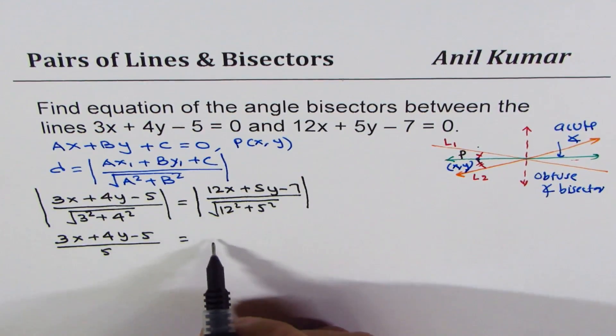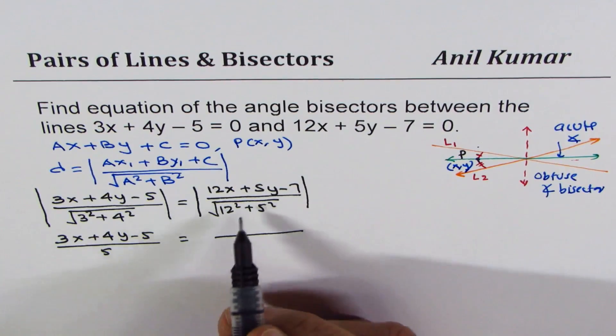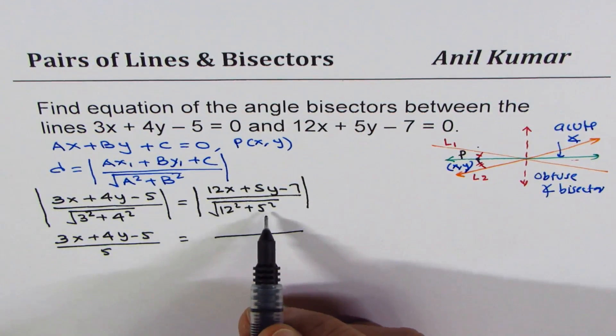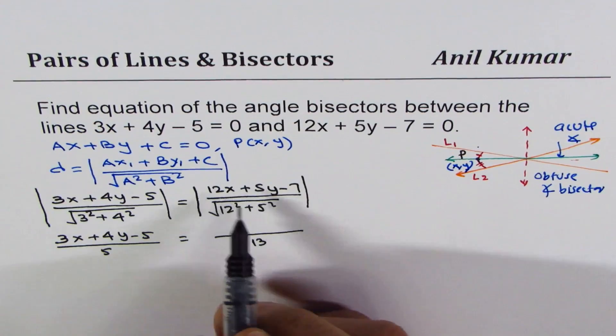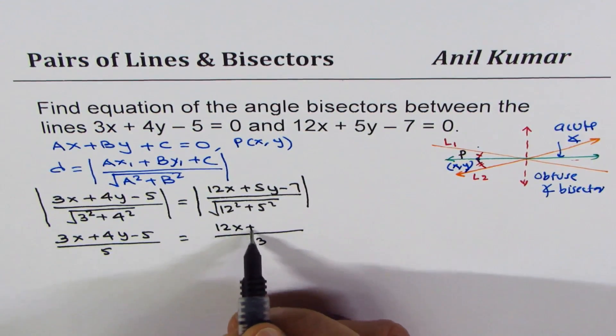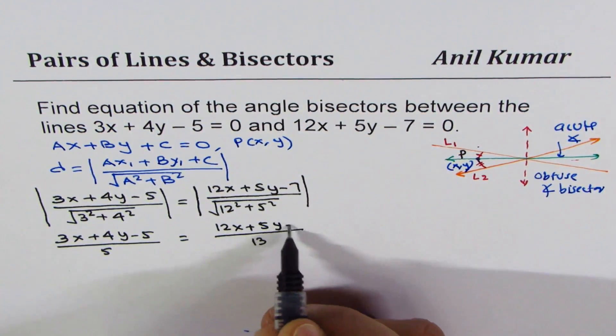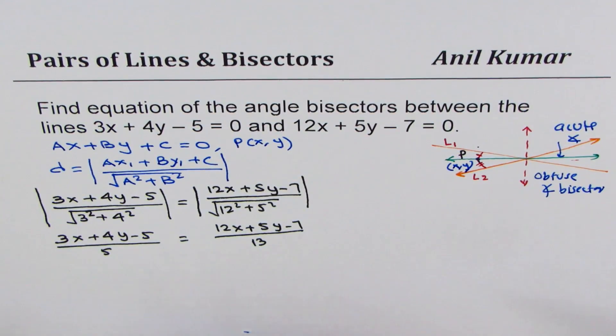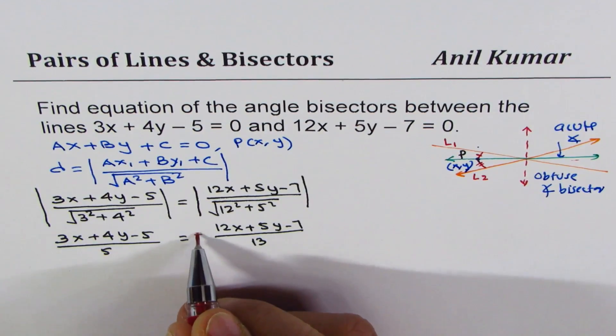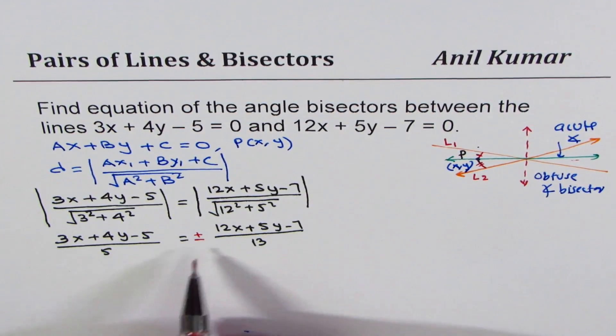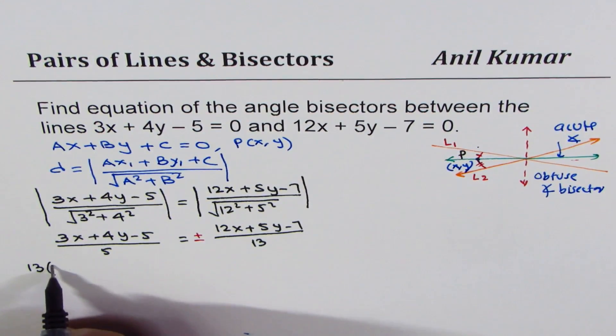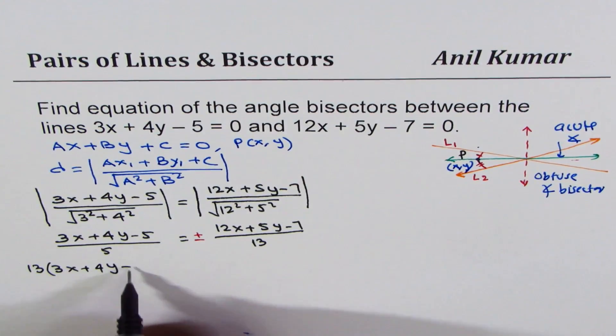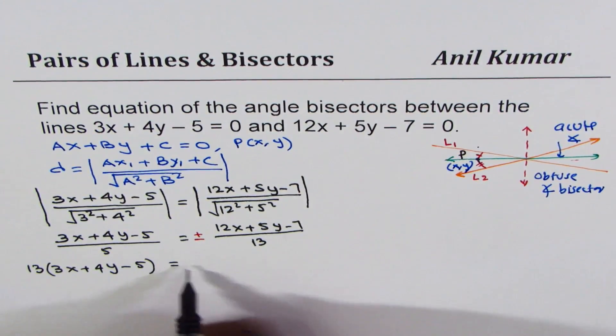So we have |3x + 4y - 5| / 5 = |12x + 5y - 7| / 13. With absolute values, this gives us plus or minus, leading to two equations. Cross multiplying: 13(3x + 4y - 5) = ±5(12x + 5y - 7).